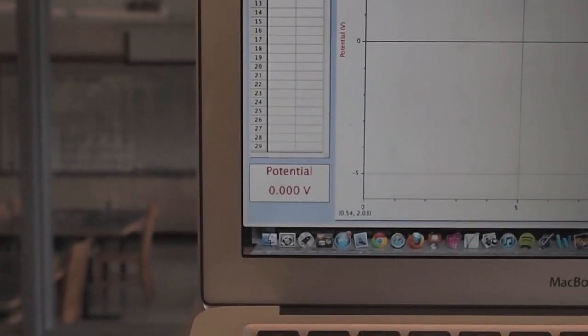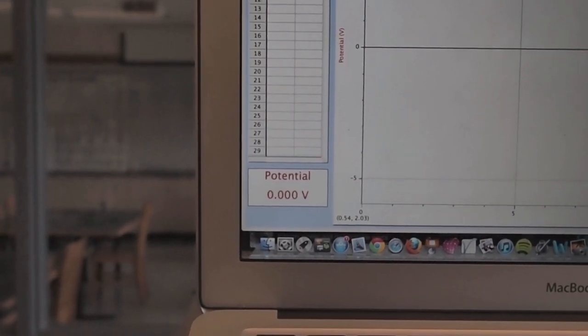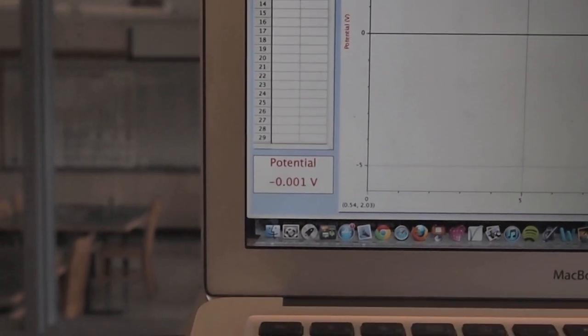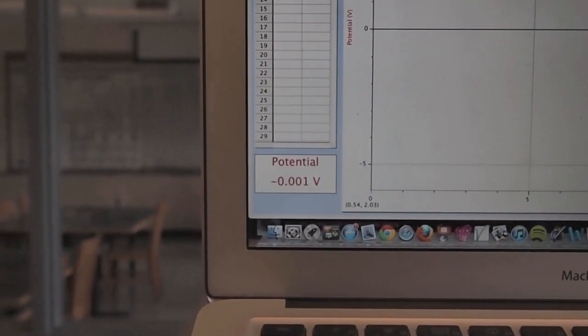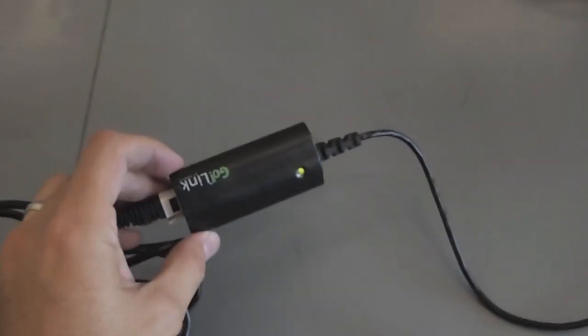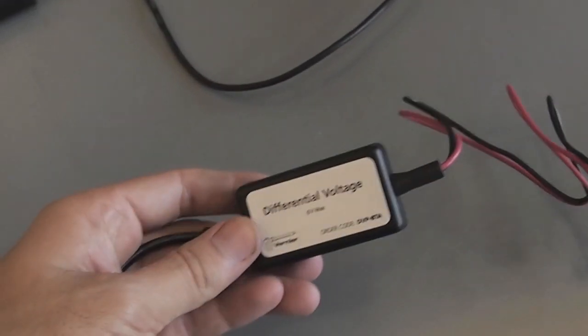Okay, so I'm using Logger Pro and a couple of probes to be able to test for the electrochemical potential. That's the voltage. And you'll notice that we're starting out with a voltage of zero, which we should. The basic setup is, you can see down here I've got a little Golink, which is a piece of equipment from Vernier, and I've also got a Vernier differential voltage probe with two leads.